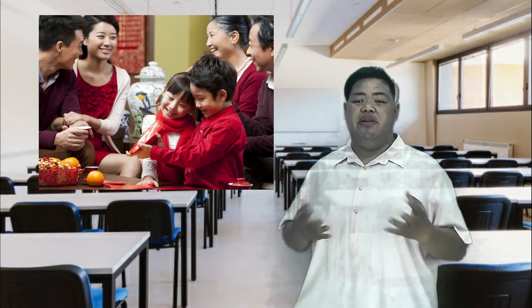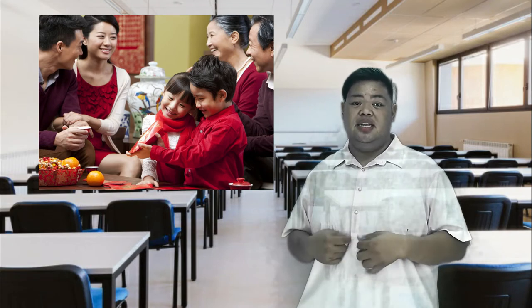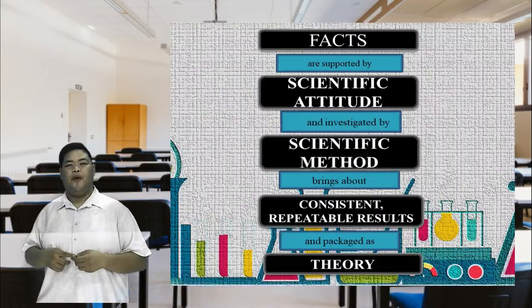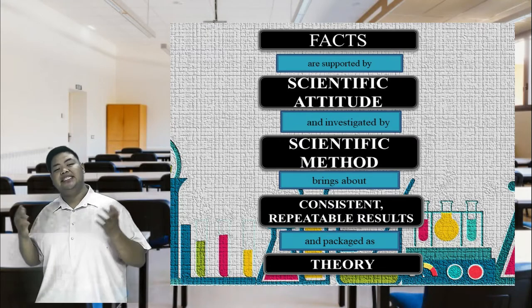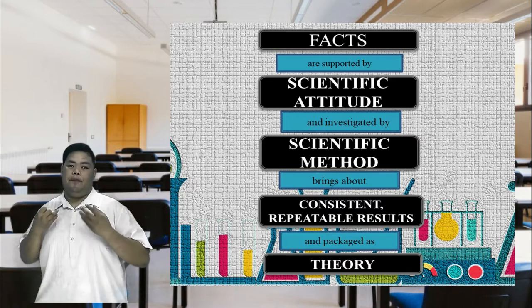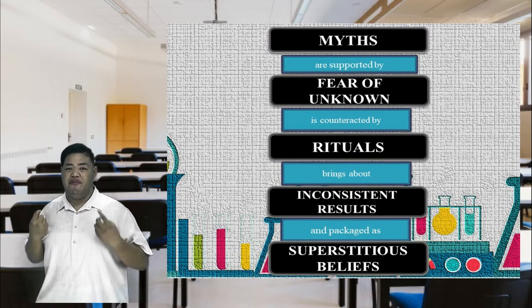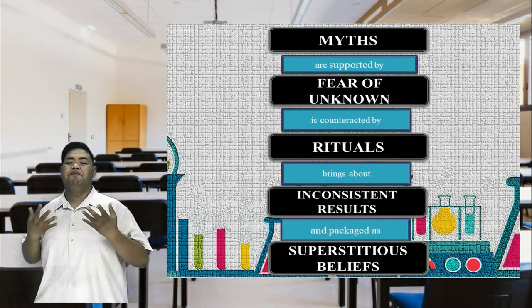Just for instance, the Chinese have their own beliefs that they do and practice. We Filipinos also have our own set of beliefs. We may differ, but believing in other beliefs does not invalidate our belief. For example, Chinese people believe that wearing red clothes during birthdays brings luck and prosperity. Sometimes in our culture, Filipinos wear red also during birthdays. Now, how can we validate whether a belief is a fact or a myth? Facts are supported by scientific attitude and investigated by scientific method, bringing about consistent, repeatable results and packaged as theory. While myths are supported by fear of unknown that is counteracted by rituals, bringing about inconsistent results and packaged as superstitious beliefs.